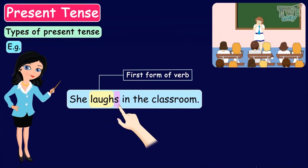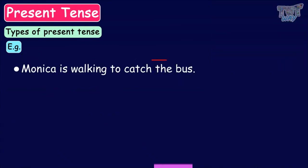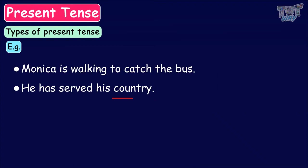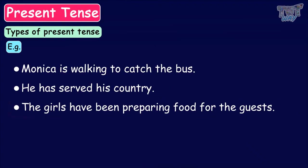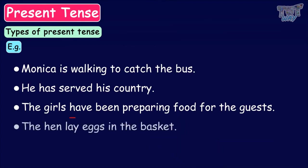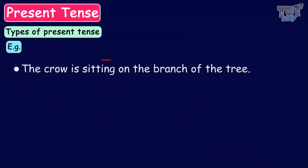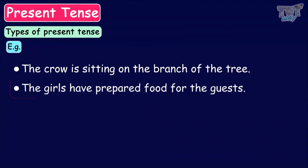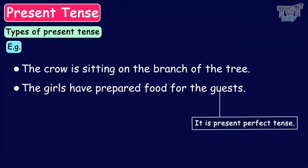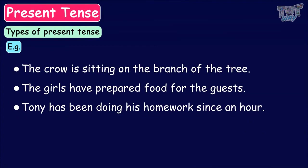Now let's classify some sentences quickly. 'Monica is walking to catch the bus' — present progressive tense. 'He has served his country' — present perfect tense. 'The girls have been preparing for the guests' — present progressive tense. 'The hen lay eggs in the basket' — simple present tense. 'The crow is sitting on the branch of the tree' — present progressive tense. 'The girls have prepared food for the guests' — present perfect tense. 'Tony has been doing his homework since an hour' — present perfect progressive tense. 'Harry is watching a movie' — present progressive tense.